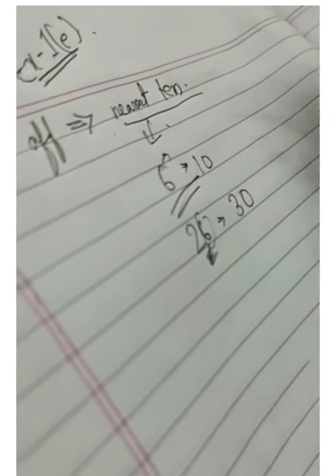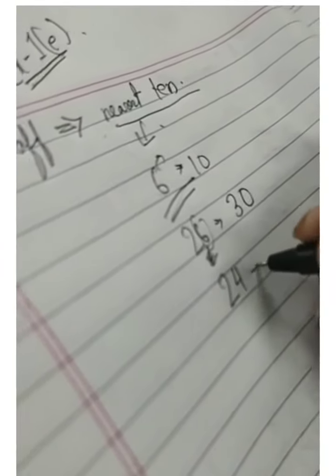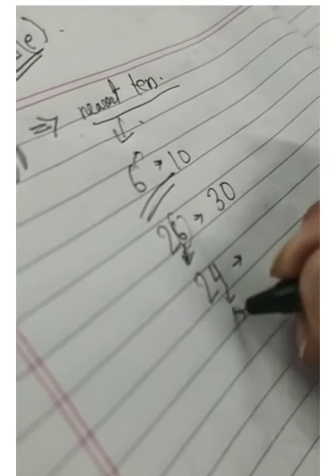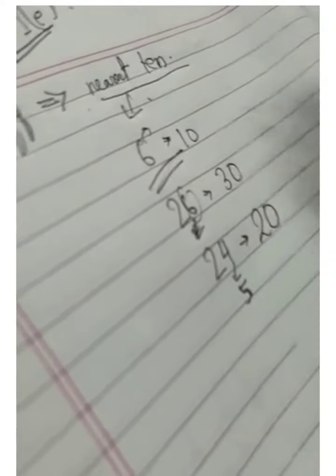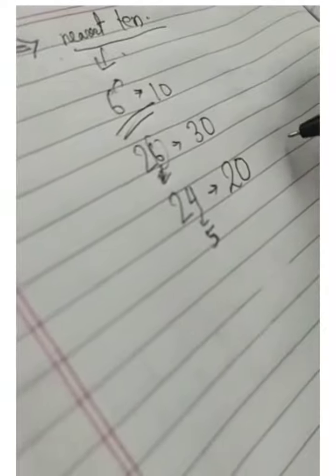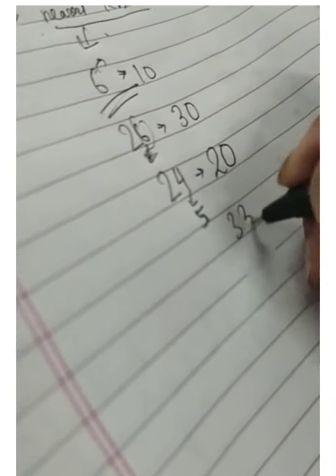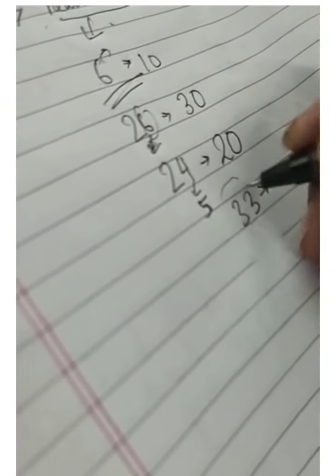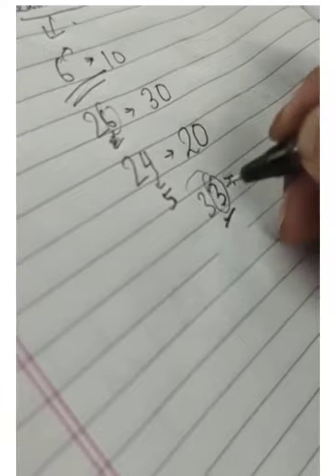If it would be twenty-four, this number is less than five, so its nearest ten will be twenty. Same example: if we take thirty-three, thirty-three is a number and we have to make it nearest ten. Teen jo hai wo five se kam hai, so it will be thirty.